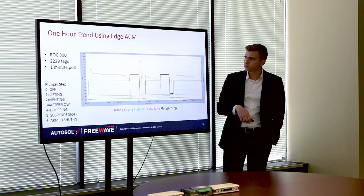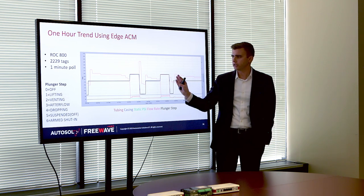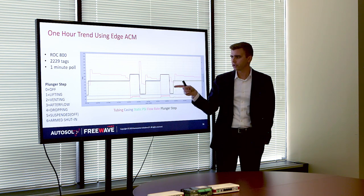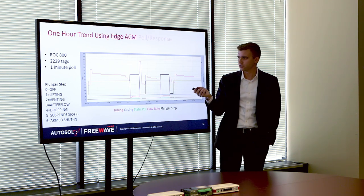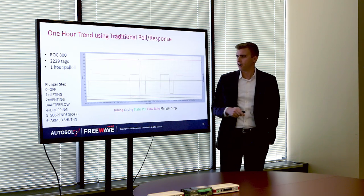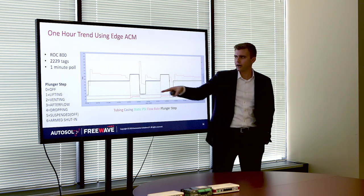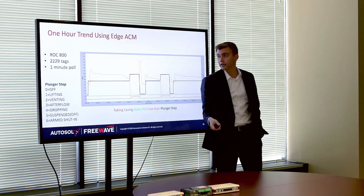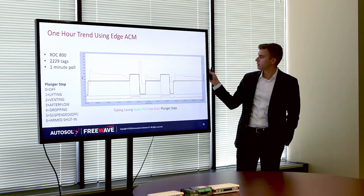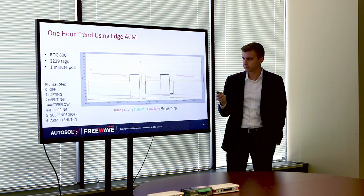Now this is what that same hour looked like using Edge ACM. The big difference is we actually caught the plunger step — we show actual activity on the plunger. The previous view had nothing on the plunger step. This is the same number of tags, but now with one-minute polling for the tags that matter. So again, 60 times the data resolution using all the same existing infrastructure.